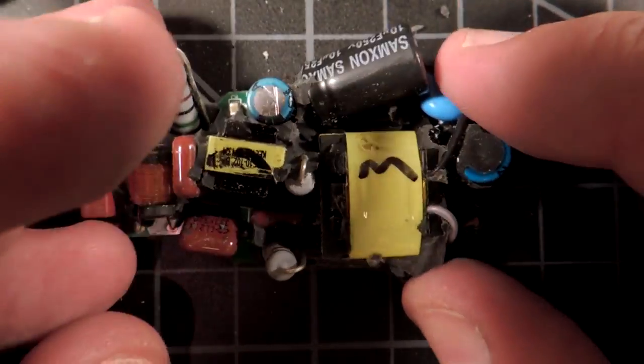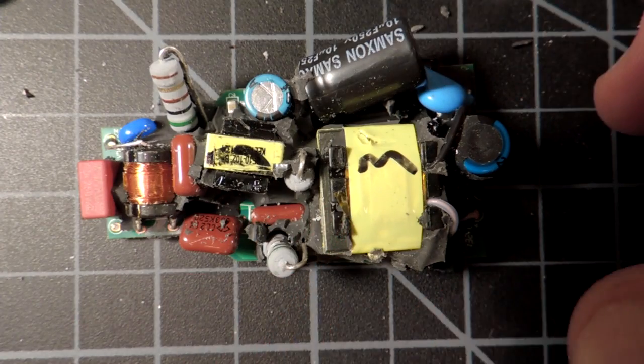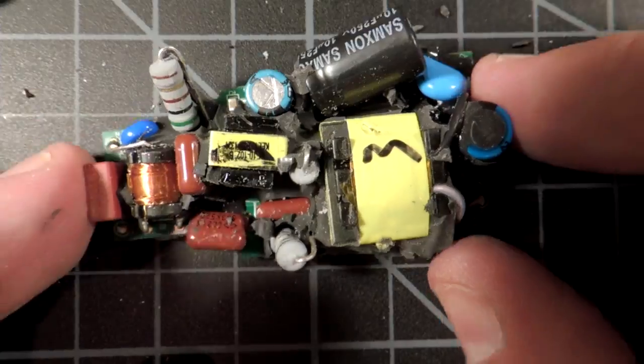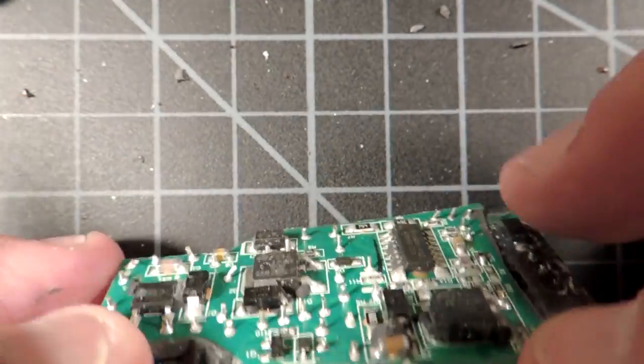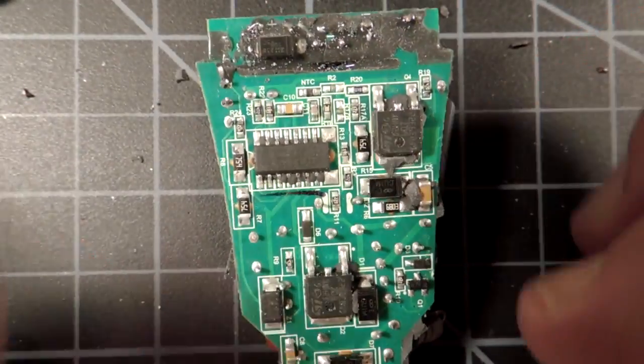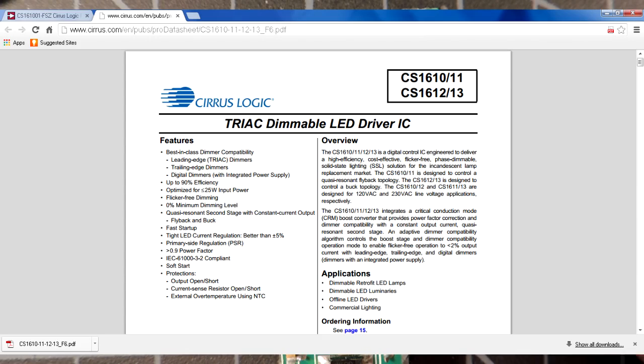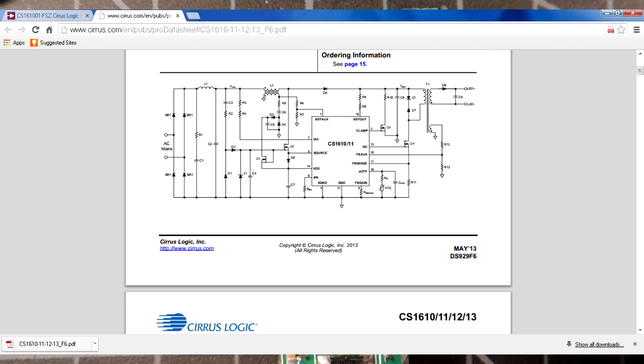But what's really exciting, though, is two transformers. One here, and one here. I haven't seen a dual transformer design before, and perhaps this is what's contributing to just excellent flicker performance. Main controller I see is here. Cirrus Logic, CS1610. I pop up the datasheet here, and you can see the topology, actually. They have a little application note. And, of course, the app note pretty much mimics what we see on the circuit board here. Very cool.